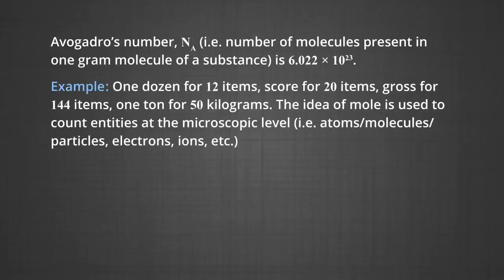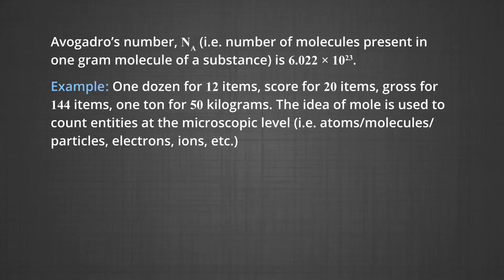For example, we generally denote 1 dozen for 12 items, score for 20 items, gross for 144 items, 1 tonne for 50 kilograms, and so on to count different substances. The idea of mole is used to count entities at the microscopic level — that is, atoms, molecules, particles, electrons, ions, etc.